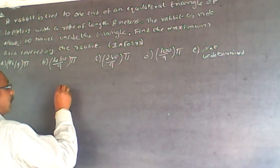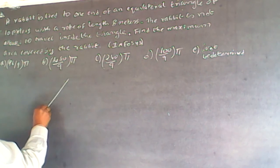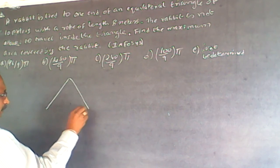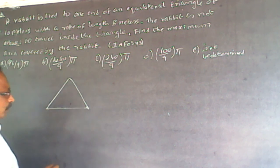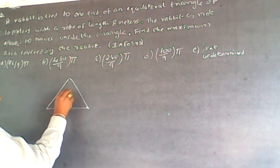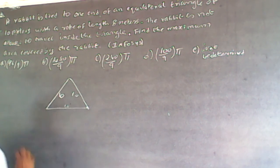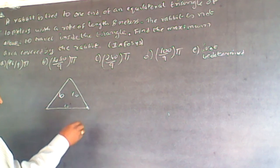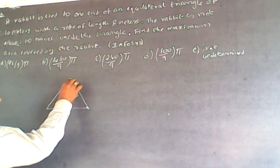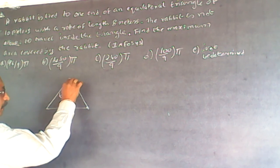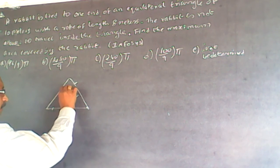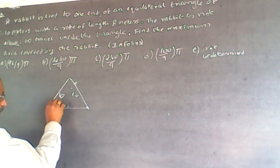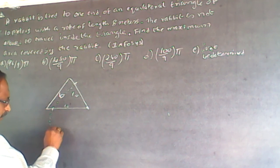The triangle is like this. The rabbit is tied here. This side is 10, this side is 10, because it is equilateral — all sides are equal. Because the rope length is 8 meters, it will extend 8 here and 8 here. It will go in a curve like this on both sides, forming a circular arc around the tied vertex.